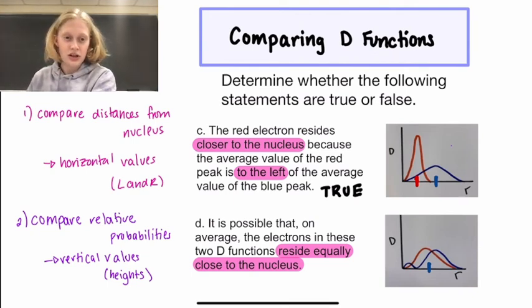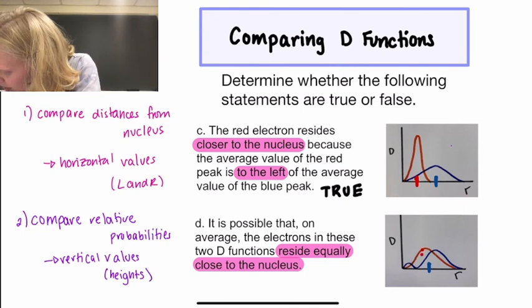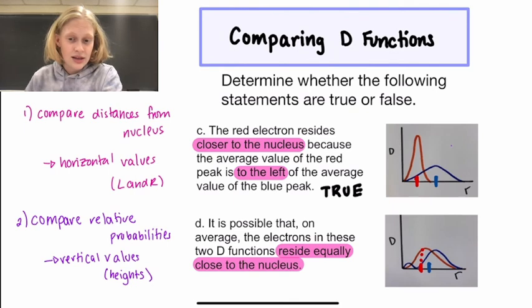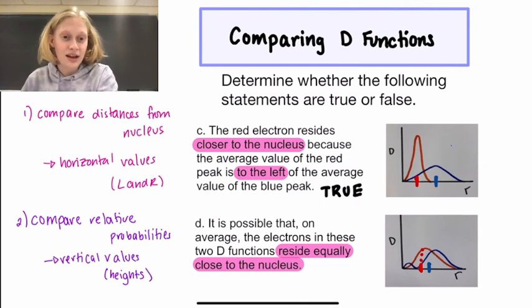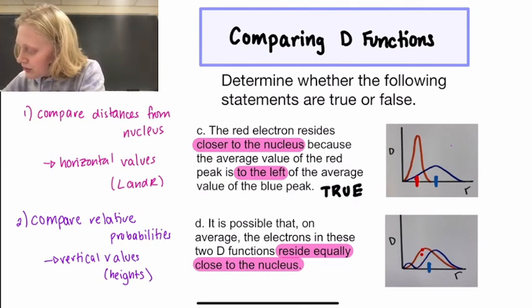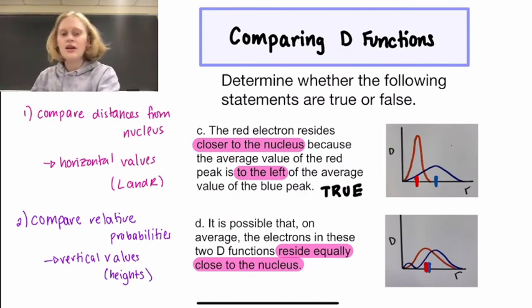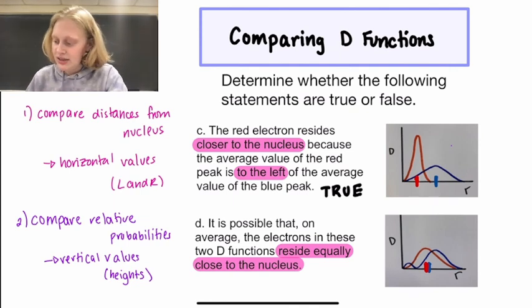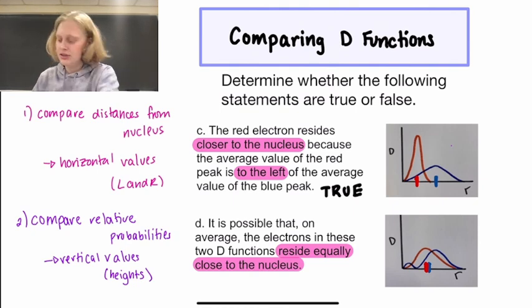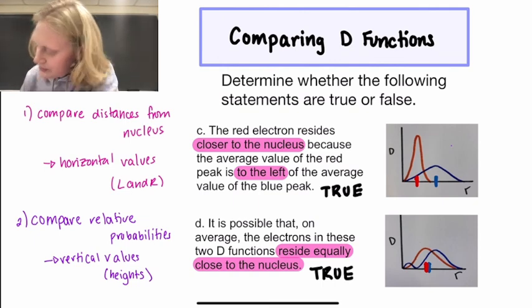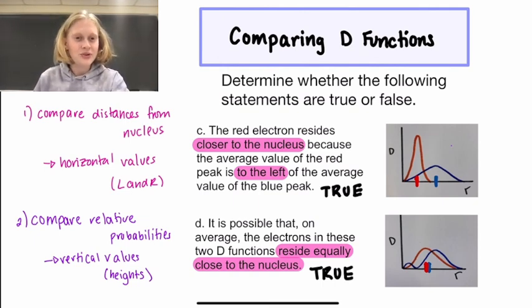Looking at the red function, similarly, you might be tempted to put the average value right under the highest point. But it actually is shifted to the right because we have more area on the right side than on the left side. So since these are just rough estimates, it is entirely possible that on average the electrons in these two d-functions reside equally close to the nucleus. So this statement is also true. I hope this video was helpful. Thanks for watching.